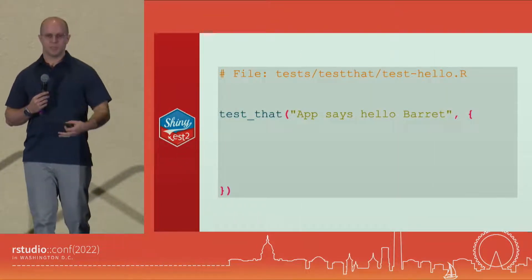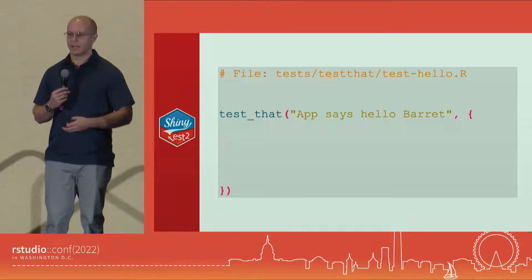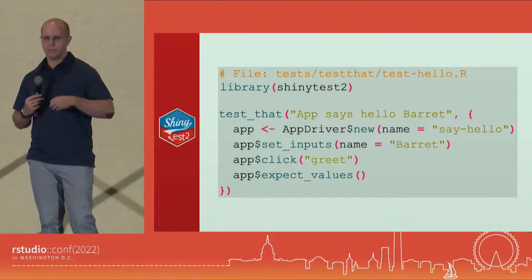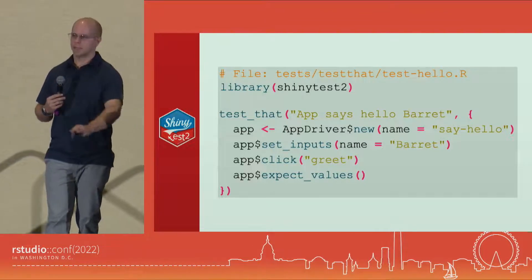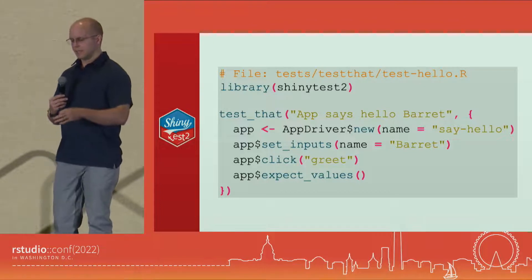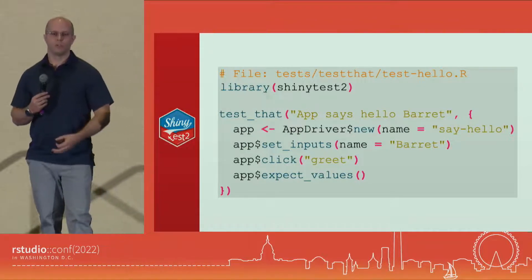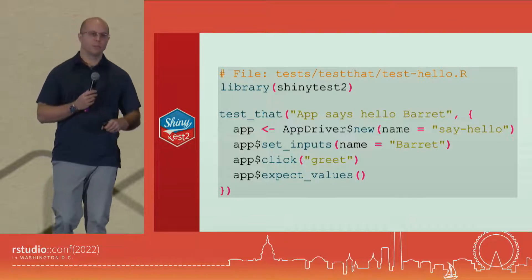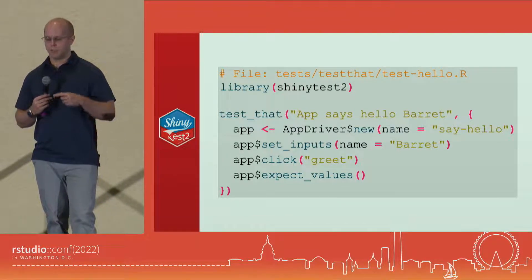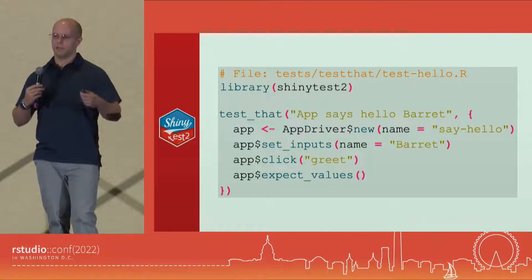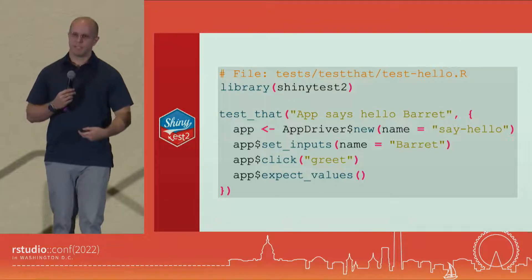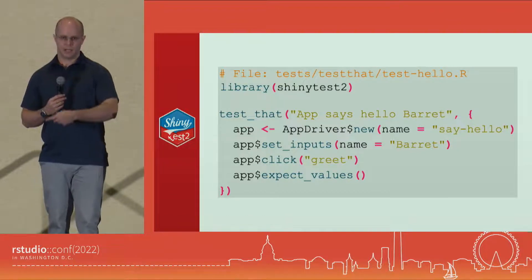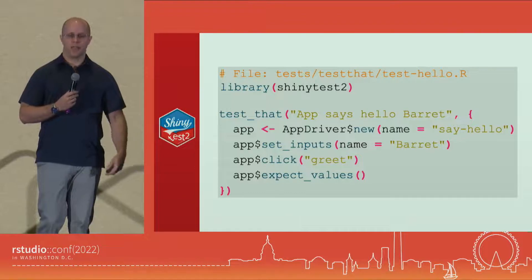If I were to set that up as a test, we'd write testthat code. Inside the test, we set up our AppDriver — the thing that orchestrates everything, gets Chromote going, gets your Shiny app going, and handles all interactions. We tell the app to set the input: name is Barrett. Then click the greet button. When everything is done, we call expect_values to make sure inputs and outputs are consistent. In just four lines of code, I set up the app, set some inputs, and made expectations.